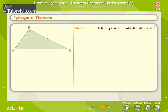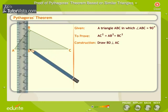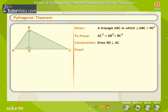We are given a triangle ABC with the right angle at B. AC is the hypotenuse. We must prove that the square on the hypotenuse, that is AC squared, is equal to AB squared plus BC squared. For construction, from B we draw BD perpendicular to AC. We now prove the theorem.